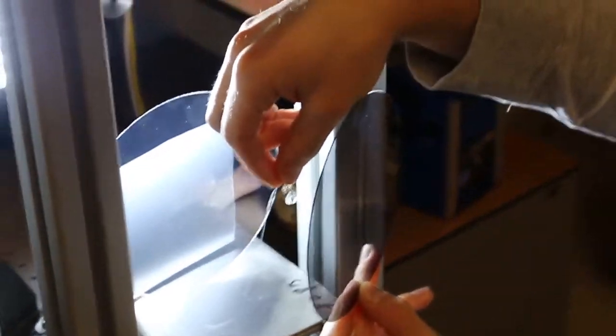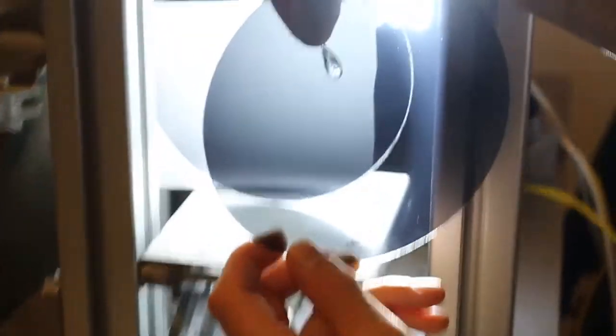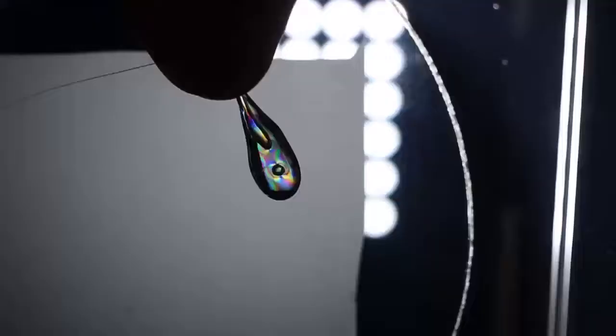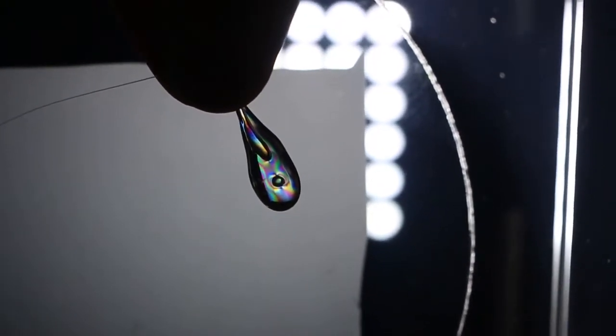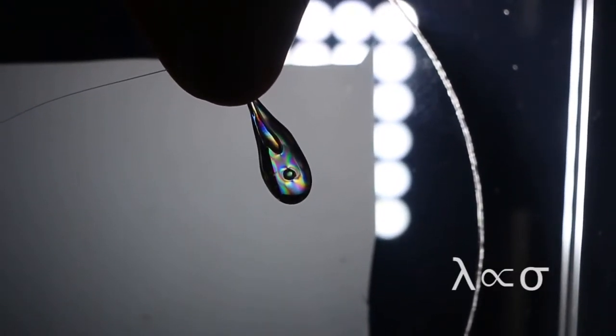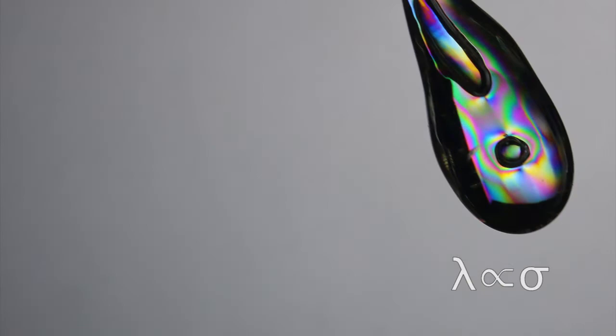We can see the stresses in the drop when we hold it between two crossed polarizers. The stress in the drop will cause these color fringes to appear. The color of the light depends on the relative strength of the stresses in the material. We can use this to interpret the color pattern in the drop as a stress gradient.